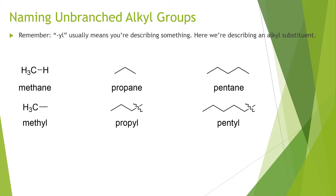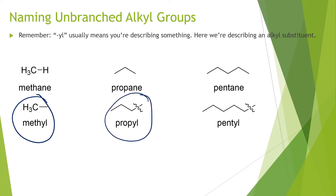We also need names for the unbranched alkyl groups. When you see the suffix '-yl,' it usually means you're describing something — like an adjective — describing an alkyl substituent. So a one-carbon substituent is called a methyl group, a three-carbon substituent is called propyl, and a five-carbon substituent is called pentyl.